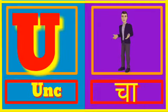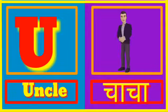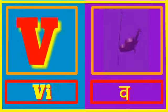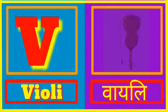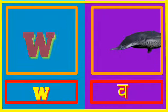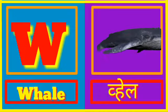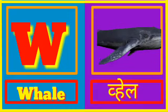U for Uncle. Uncle means Cha-Cha. V for Violin. Violin means Violin. W for Whale. Whale means Whale.